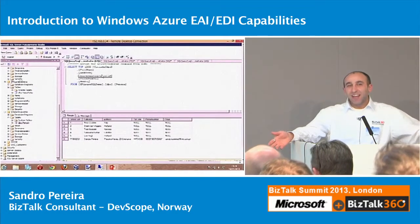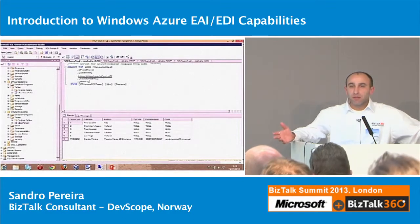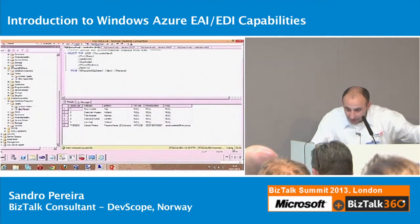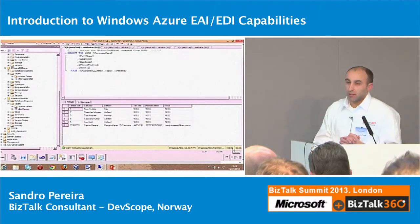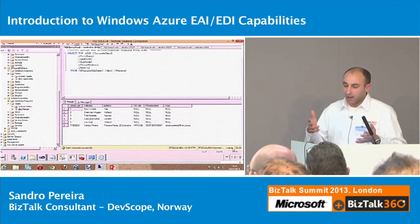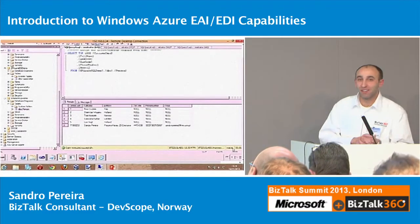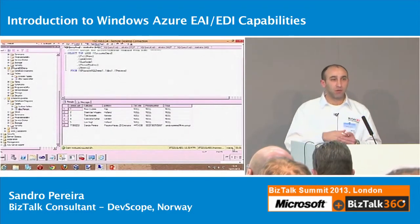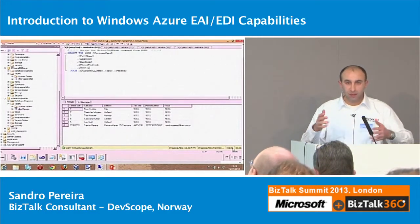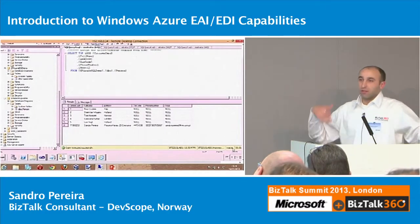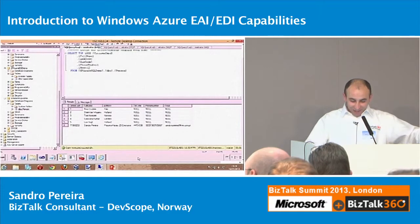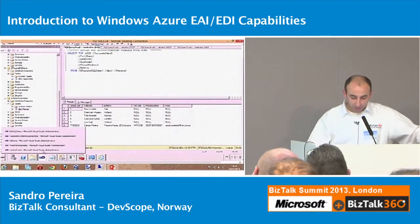In about 10 minutes, you can have an application on the cloud that makes transformations and connects with your internal system. The next scenario is an order processor integration: you send orders to the cloud. If it's a top priority order, the message goes to SQL. If it's a normal message, it goes to a queue on Windows Azure. And if it's an invalid order, it goes to another SQL table.